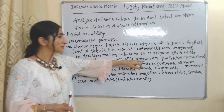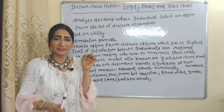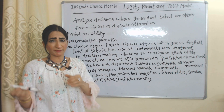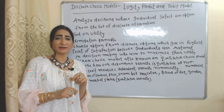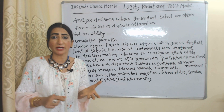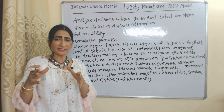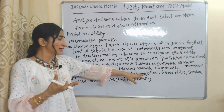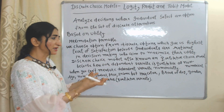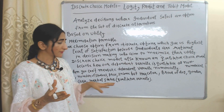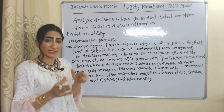Discrete choice models are also known as qualitative choice models — but why? Because under discrete choice models, our dependent variable is qualitative. What do we mean by a qualitative dependent variable? It means we cannot measure our dependent variable in terms of numbers. For example, you can measure number of students or income in terms of numbers, but how can you measure hair color, breed of dog, gender, or marital status in terms of numbers? All these are qualitative variables.